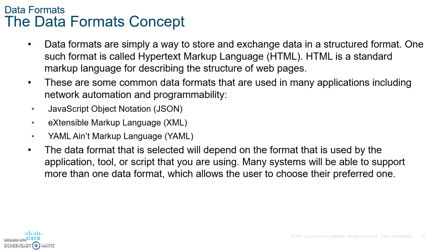Data formats are simply a way to store and exchange data in a structured format. Please write that down. The different types of data formats include HTML, JSON, XML, and YAML. Write these down and what they stand for. The data format selected will depend on the format used by the application, tools, or script — some automation devices will use JSON, some will use XML, typically for web pages, or YAML. It all depends on the application tool or script.